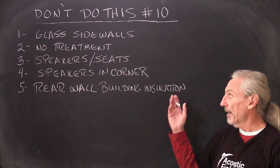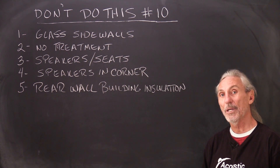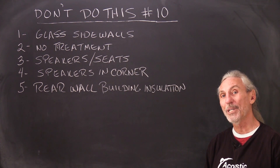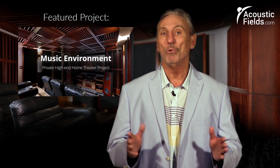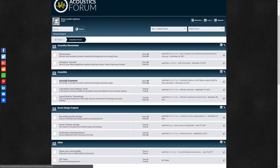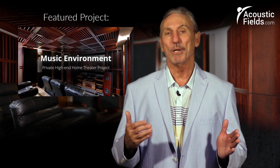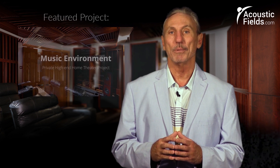So five situations here: glass sidewalls, no treatment, speakers above the seats, speakers in corners, and rear wall with building insulation — things you really don't want to do in a critical listening environment. Hope this helps. Thank you for watching. If you liked it, please give us a thumbs up. We have a newsletter you can subscribe to — we offer special price discounts to newsletter subscribers only. And don't forget our forum on our website, where people ask questions and I answer them every couple of days. We'll give you real answers on a regular basis.